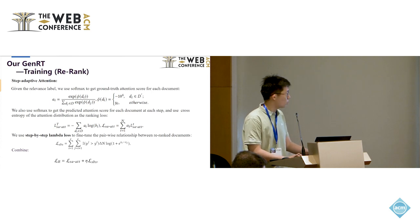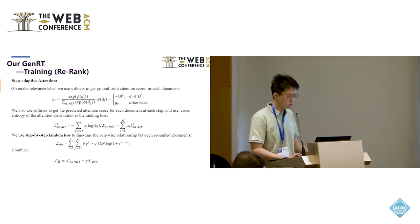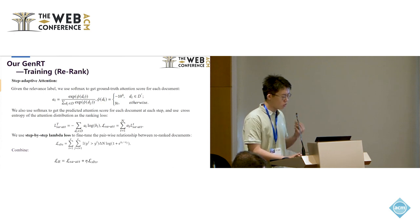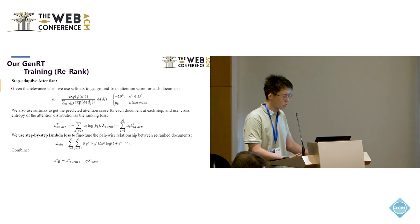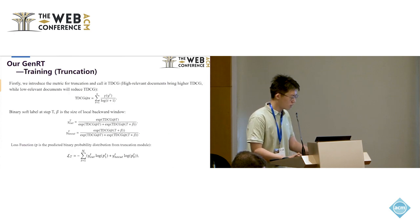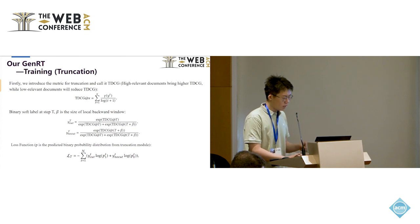Now, we will introduce the training of our JRT. In the training of rerank, we propose the step-adaptive attention loss. At each step, it obtains the ground truth distribution of the input document list and the distribution of the predicted matching score in the dynamic ranking list. Then, it uses cross-entropy between two distributions as a loss function at each step. We also use the step-by-step lambda loss to fine-tune the pairwise relationship between re-ranked documents. We combine these two loss functions as the final loss function for ranking.